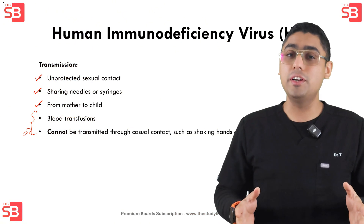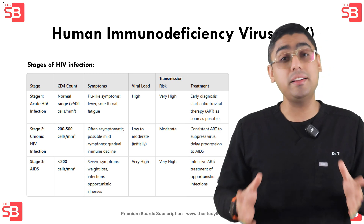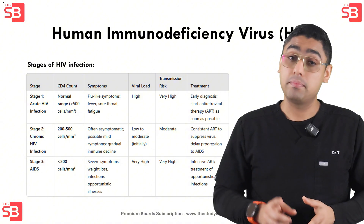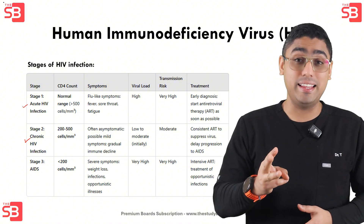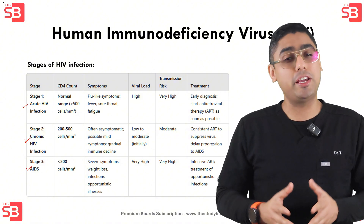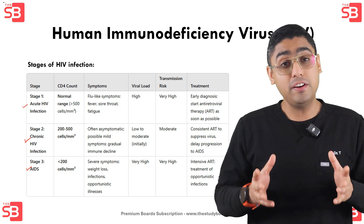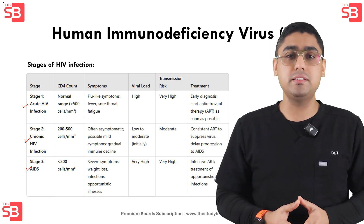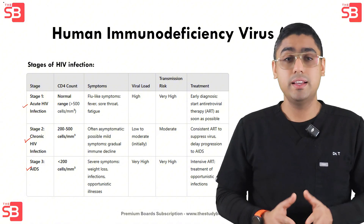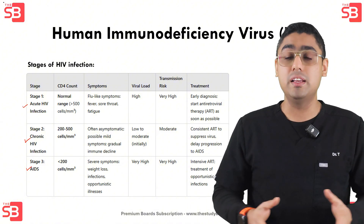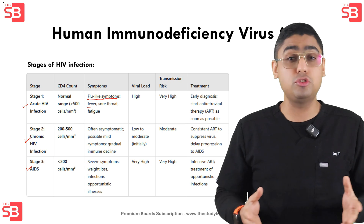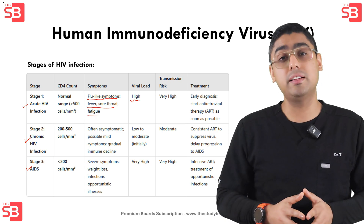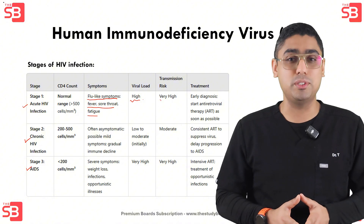Now if we look into the stages of HIV, we can categorize the progression into three main stages: acute, chronic and then AIDS. The first stage, acute, usually occurs 2 to 4 weeks after the virus enters the body. Symptoms can often resemble the flu, including fever, sore throat and fatigue, and in this stage the viral load is very high, meaning there is a very high risk of transmission.